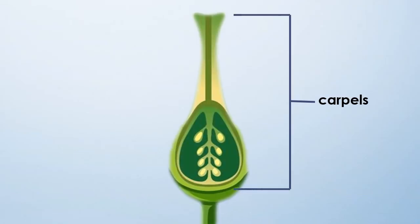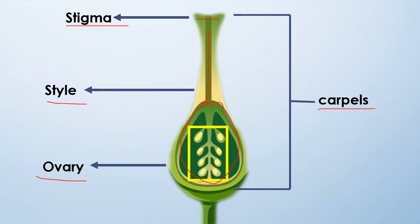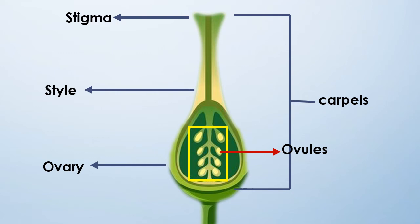Members of gynoecium are called carpels; they may be separate or united. The ovary is present at the basal end of each carpel. A hollow style extends from the ovary, and the stigma is present at the tip of the style. The ovary contains one or more ovules.